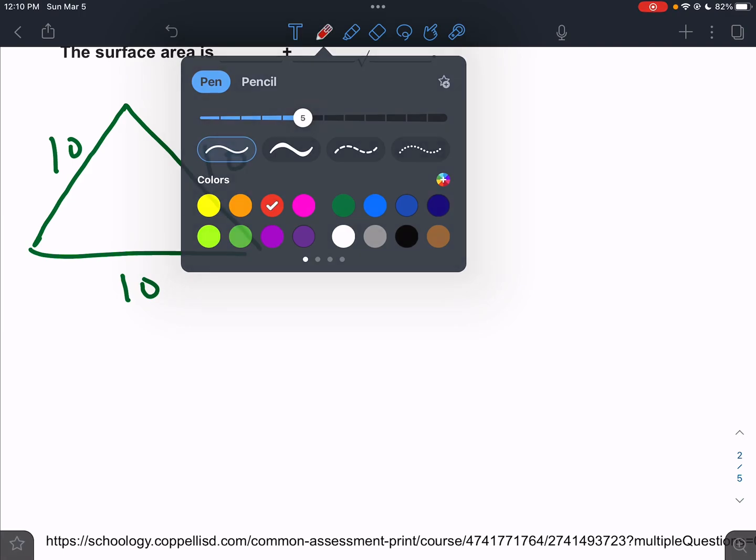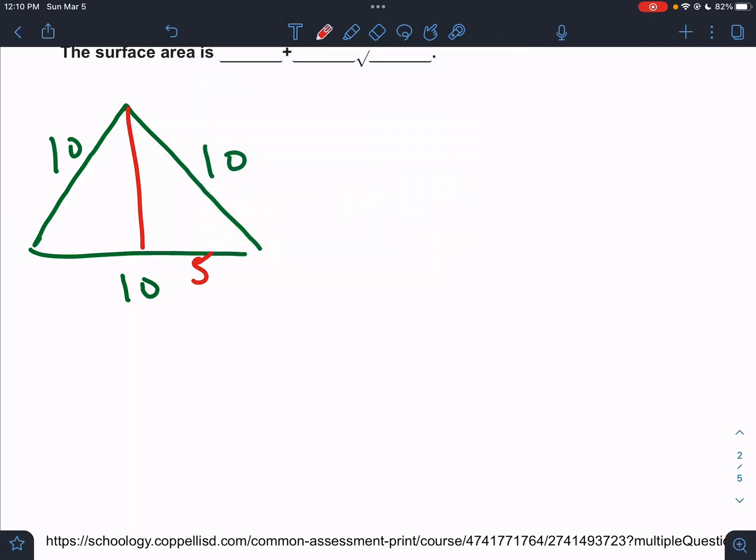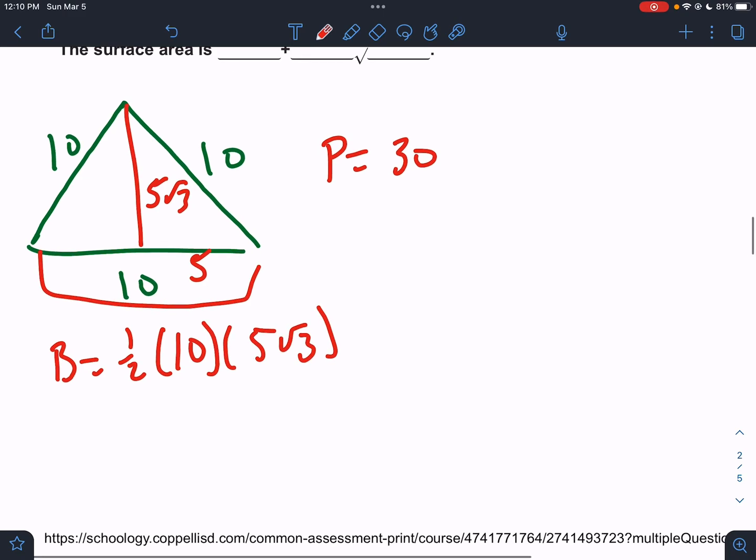And we need to be really fast at these guys. We drop a height, we cut in half, it's 5 root 3. Like, you just need to know that pretty quick. It's going to happen way too much. So the perimeter of this triangle is 30. The area would be one half times base times height. Remember, it's the entire base. So that would be 25 root 3.